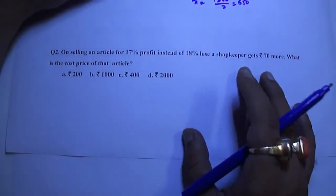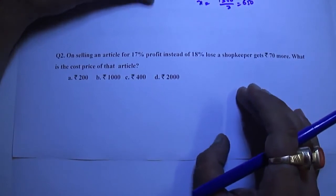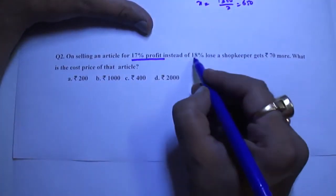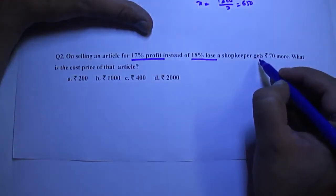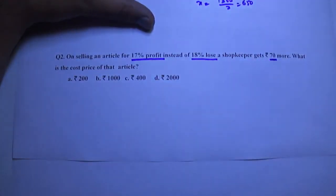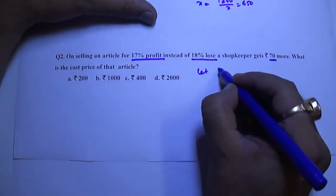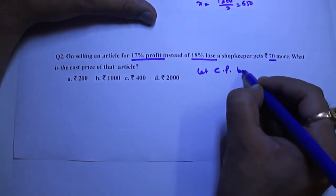One more example. On selling an article for 17% profit instead of 18% loss, a shopkeeper gets 70 more. This question is very important. Let CP be X.